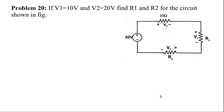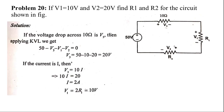Problem 20: given V1 = 10 volts and V2 = 20 volts, find R1 and R2 for the circuit. The circuit has a 50-volt source, and three resistors where R1 and R2 values are not marked — instead, the voltages across them (V1 and V2) are given. There is also a 10-ohm resistor with voltage drop V3.